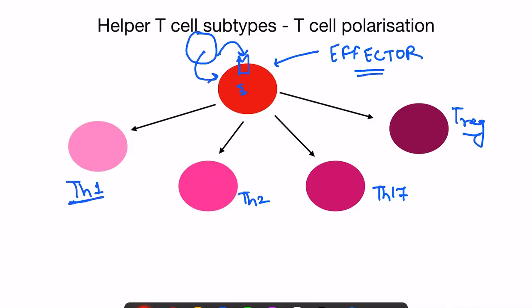What are Th1 cells? Whenever the antigen presenting cell takes up an intracellular antigen — intracellular bacteria, viruses, or cancer cells — these will be taken up and presented by antigen presenting cells. Viruses infect dendritic cells and macrophages, which break them down and present the antigen. So when intracellular bacteria, intracellular viruses, and cancer cells are presented to the T helper cells, they differentiate into Th1 cells.